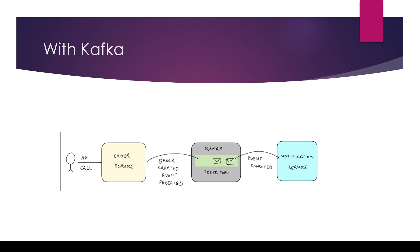With Kafka, we can decouple the order service and notification service. When a user calls the order service, it creates a new order and instead of calling the notification service directly, it creates an event stored in an order topic in Kafka. The order service can then move on and process another order. The notification service, when available, polls the topic, picks up events, and sends notifications at its own speed and throughput. This decoupling means slowness in the notification service does not block the order service. In the next video we will implement this scenario using Spring Boot and Apache Kafka.